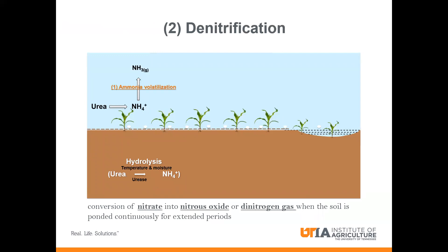The next nitrogen loss pathway is denitrification. Ammonium can be converted to ammonia gas, taken up by plants, or absorbed onto the soil surface. Ammonium is also converted to nitrate. Plants take up nitrogen in the form of either ammonium or nitrate. The process of conversion of ammonium to nitrate is referred to as nitrification, and it is carried out by Nitrosomonas and Nitrobacter.